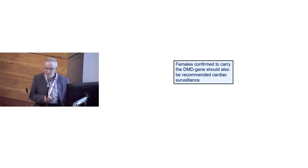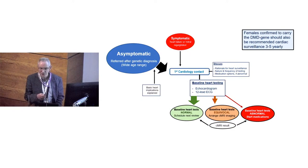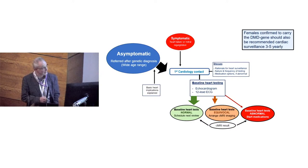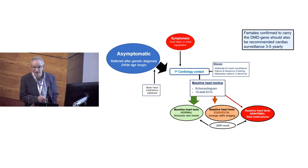A word about female carriers of the DMD gene: when a boy is diagnosed with Duchenne, mom is tested, and two-thirds of moms will be found to be positive for carrying the gene on one of their X chromosomes. Those women should be recommended cardiac surveillance as well. Cardiac involvement may be their only manifestation of the condition, and it's only a minority — about 80% of carrier women will not manifest any syndrome at all.